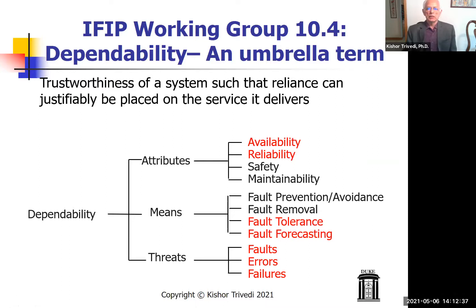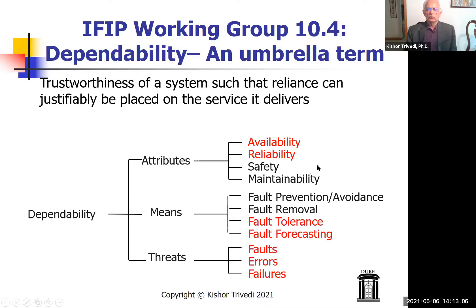Threats to dependability are classified into faults, errors, and failures. Means to achieve dependability are classified into fault prevention or fault avoidance, fault removal, fault tolerance, and fault forecasting. In this talk we'll be dealing with fault tolerance and fault forecasting. The attributes of dependability initially were availability, reliability, safety, and maintainability, and they added security later. I'm constraining myself today to reliability and availability.